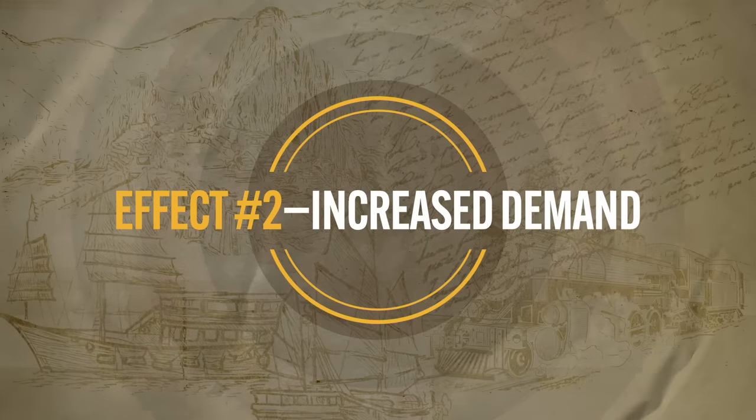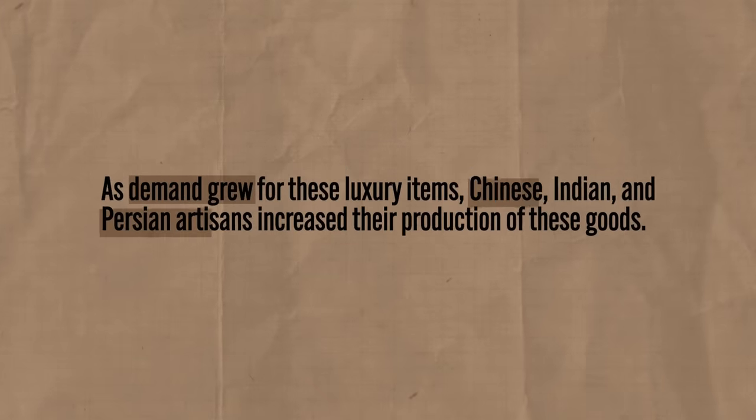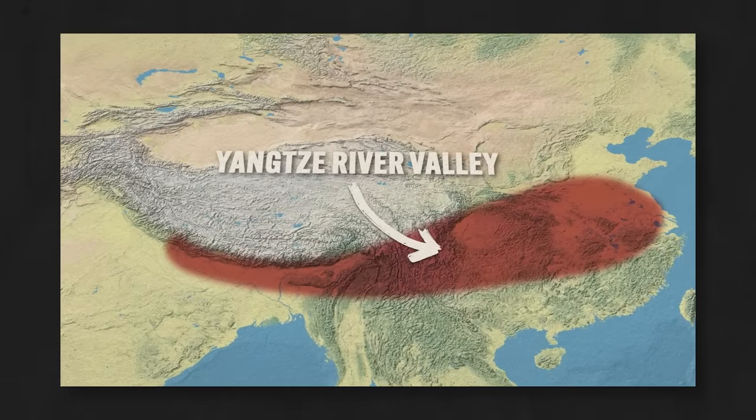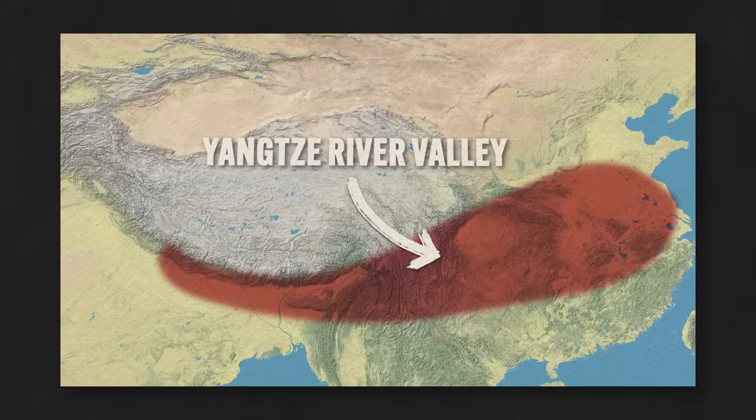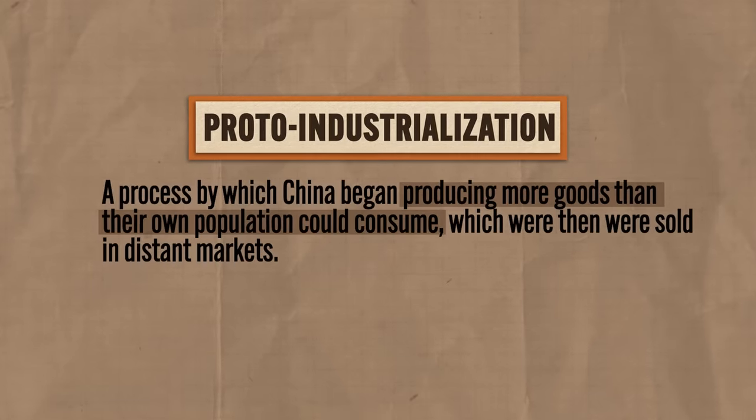The second effect of the growth of exchange networks was the increased demand for luxury goods in all places along the Silk Roads — chief among them Chinese silk and porcelain. As buyers demanded more goods, sellers got busy supplying more. Chinese, Indian, and Persian artisans increased their production. As peasants in China's Yangtze River Valley spent more time producing silk textiles for trade, they significantly scaled back on food production. This reoriented economy created the conditions for proto-industrialization — producing more goods than their own population could consume, with the surplus sent off with merchants to distant lands and profits reinvested into China's growing iron and steel industries.